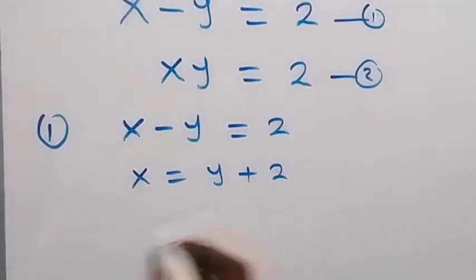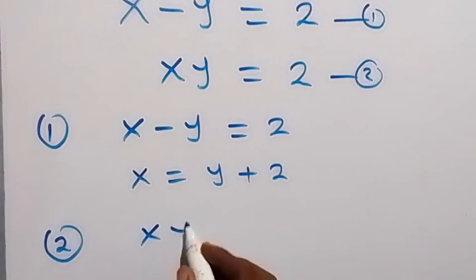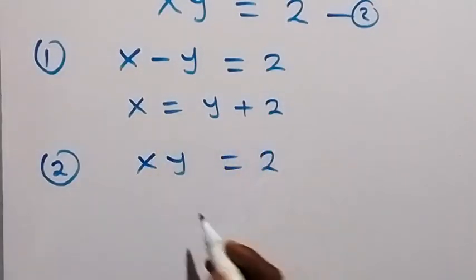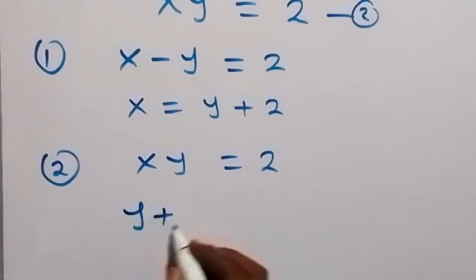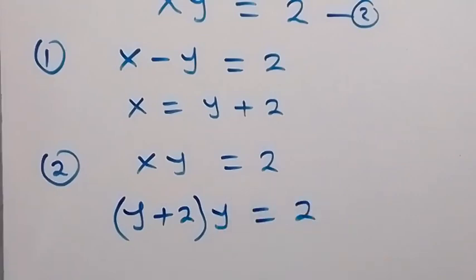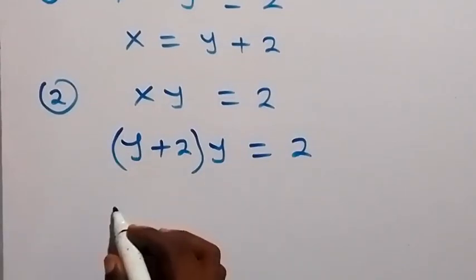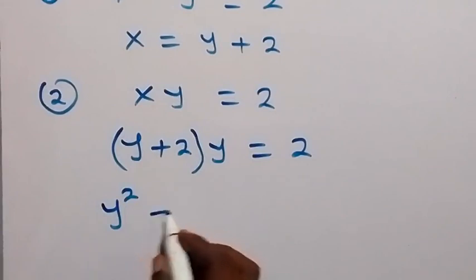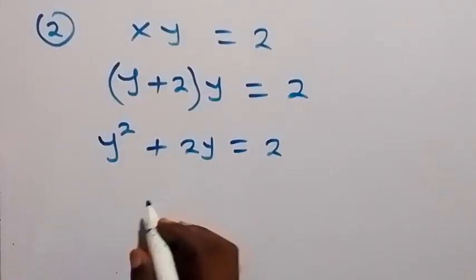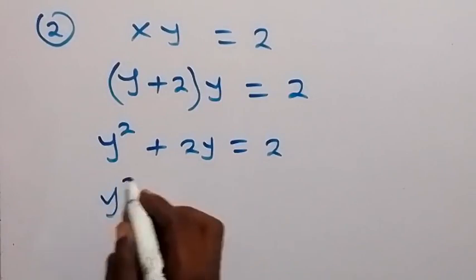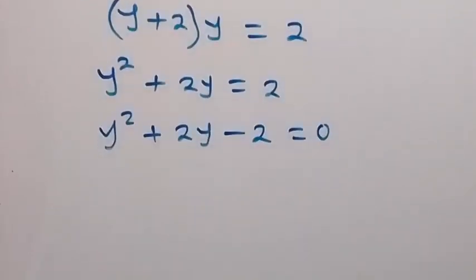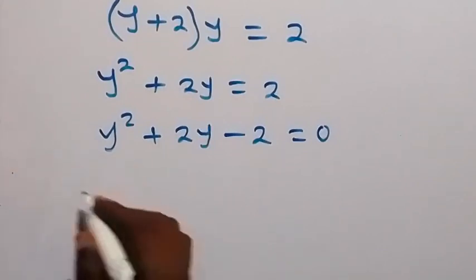From equation 2 we have x times y equals to 2. We can substitute this value of x into equation 2, and this will be y plus 2 in brackets, times y, equals to 2. When we open the bracket we have y squared plus 2y equals to 2. We take 2 to this side to form a quadratic equation: y squared plus 2y minus 2 equals to 0.